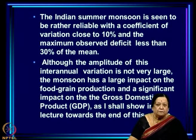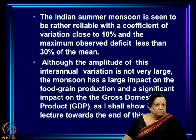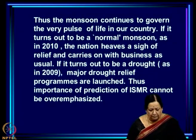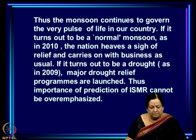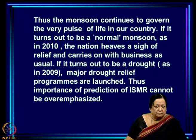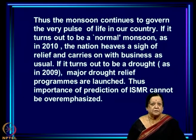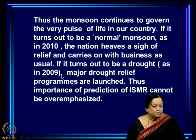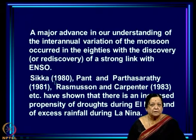Even though the amplitude of the inter-annual variation is not very large, it has a very large impact on food grain production and GDP, and so the monsoon continues to govern the very pulse of life in our country. If it turns out to be a normal monsoon as in 2010, the nation heaves a sigh of relief. If it turns out to be a drought as in 2009, major drought relief programs are launched. Thus, the importance of prediction of ISMR cannot be overemphasized.